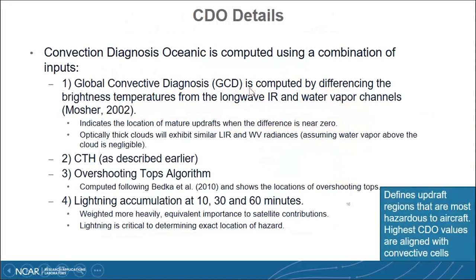For CDO, which really zeros in on convective activity, we use the GCD global convective diagnosis product based on water vapor and infrared differences. When they're near zero, you're near an optically thick cloud or overshooting tops case. We use a fuzzy logic bandpass filter on these, combine it with CTH, include the overshooting tops algorithm — a texture mapping from the 11 micron channel — and then 50% of the CDO product is lightning. We accumulate lightning at 10, 30, and 60 minutes. You really need that lightning in the product to get the full representation.